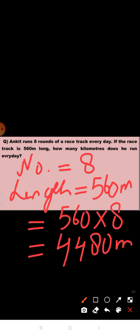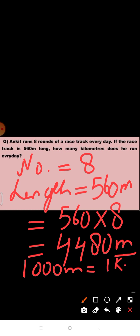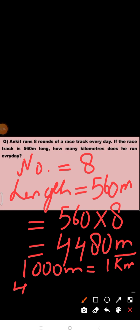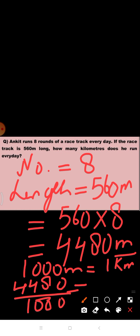We have to find our answer in kilometers, so we will convert meters to kilometers. We know that 1000 meters is equal to 1 kilometer. Therefore, 4,480 divided by 1000 is equal to 4.480 kilometers. Total distance covered by Ankit every day is equal to 4.480 kilometers.